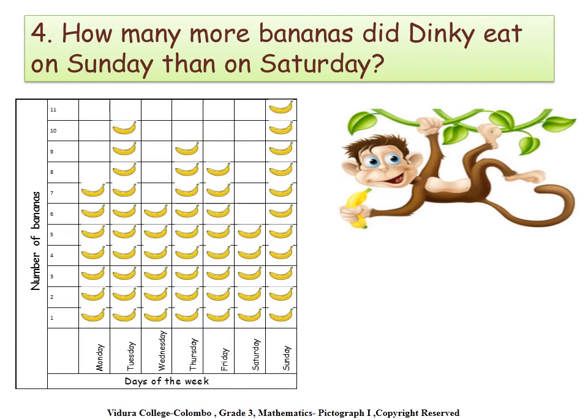Question number four: how many more bananas did Dinky eat on Sunday than on Saturday? Dinky ate eleven bananas on Sunday and five bananas on Saturday. To get the answer, we take the difference. Eleven subtract five — the answer is six. He ate six more bananas on Sunday than Saturday.